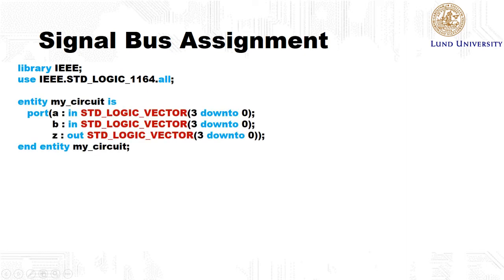To make use of the stdLogicVector, we must first include the library IEEE, and then we must tell the tool that we would like to use the package std-logic-1164. Then we can use the data type stdLogicVector, and when we use this vector we must also specify how wide this vector is. So here we specify it as 3 down to 0, so this means that we will get 4 bits, and the down to indicates that we count from left to right. So the leftmost bit is the highest bit, or bit number 3.